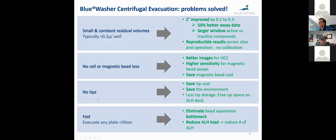So first off, we have small and consistent residual volumes, typically smaller than 0.1 microliters per well, which means that the Z prime, which is a measure for assay data quality, improves. Data becomes a lot more reproducible, and you don't need to calibrate. You eliminate cell or magnetic bead loss, which means you get better images for screening, you get higher sensitivity for magnetic bead assays, and you save magnetic bead cost because you don't have to overcompensate for anticipated magnetic bead loss by putting in more to begin with.